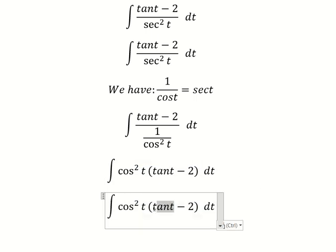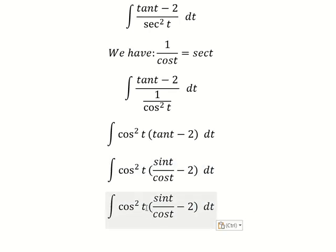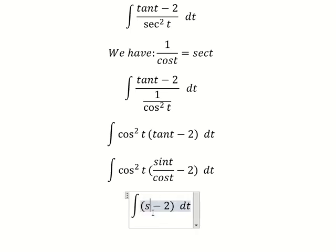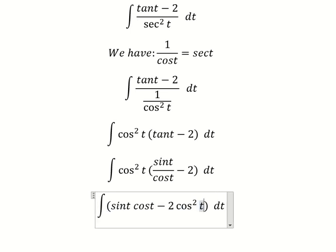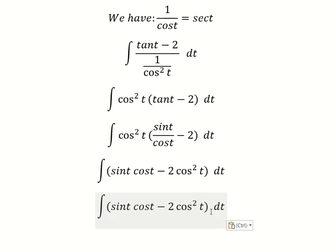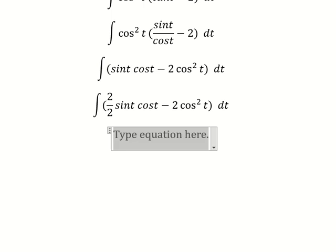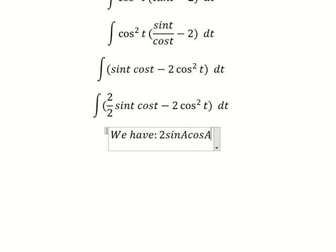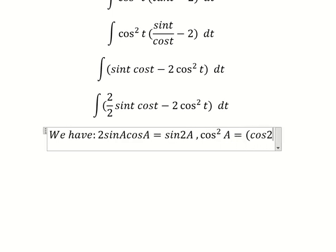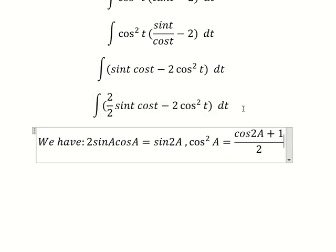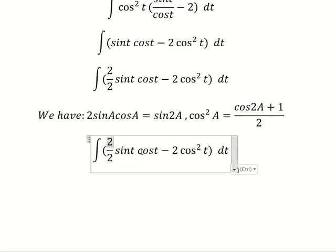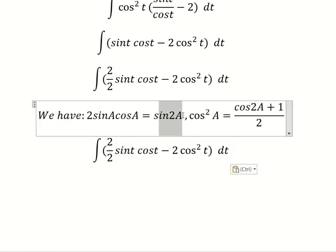Next, tan(t) equals sin(t) over cos(t). We multiply this by the expression and the factor of two. Then we put two over two to apply the double-angle formula. The second term is then transformed into sin(2t).